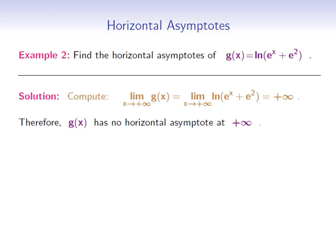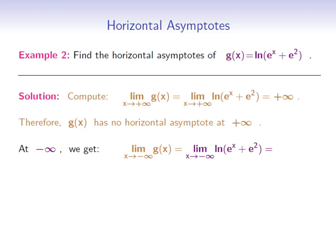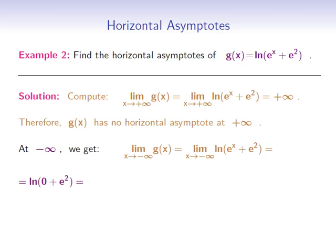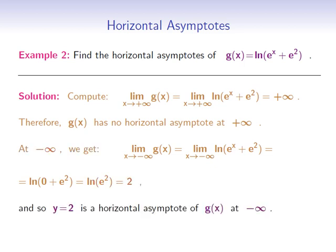Now we have to check the behavior of g at negative infinity. We need to find the limit as x goes to negative infinity of the natural logarithm of e to the x plus e squared. As x goes to negative infinity, e to the x will go to 0. Therefore this limit is equal to the natural logarithm of 0 plus e squared, which is equal to the natural log of e squared, which is clearly equal to 2. Therefore the line y equals 2 is a horizontal asymptote of g at negative infinity.